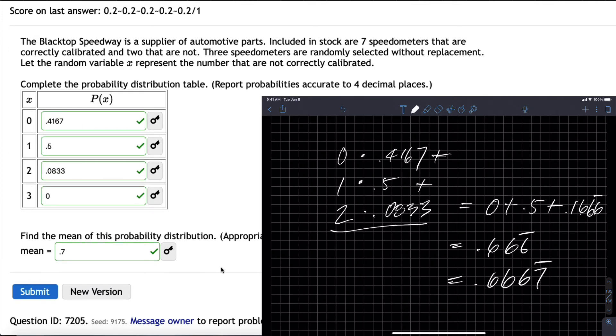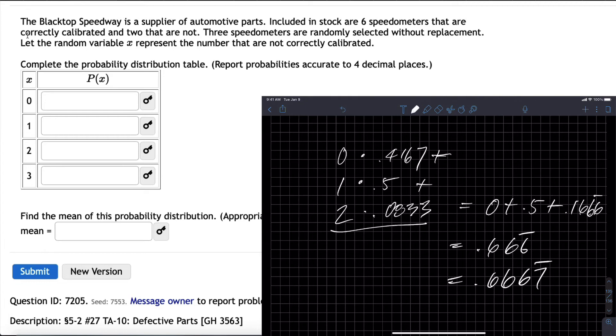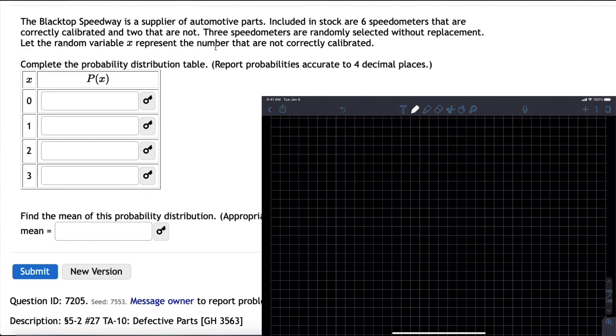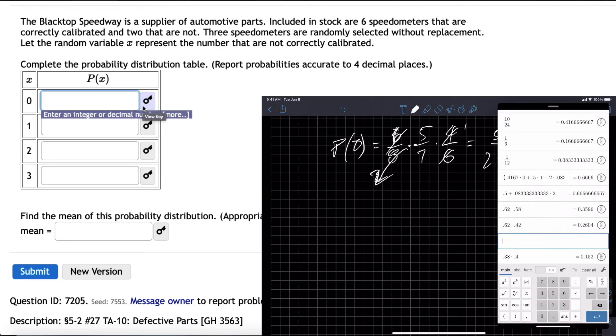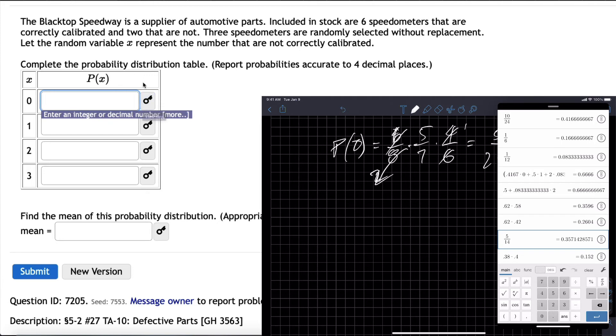You're not going to know that. When you get to this question, run it to one decimal place, I guess. We could get a new version. Six speedometers instead of two. This is going to be six out of eight times five out of seven times four out of six. Four goes into that twice, so we get five times one over two times seven, which is five over fourteen. That's 0.3571.